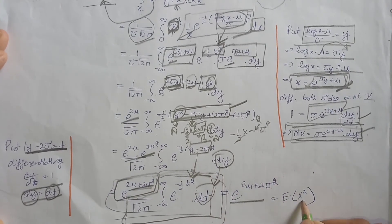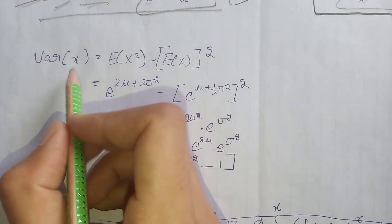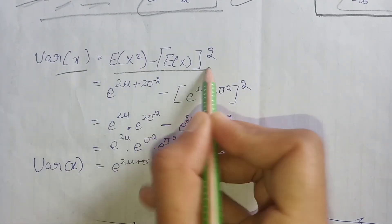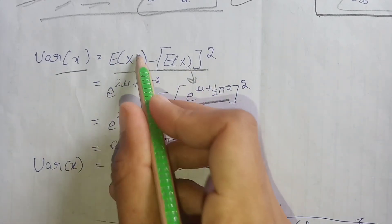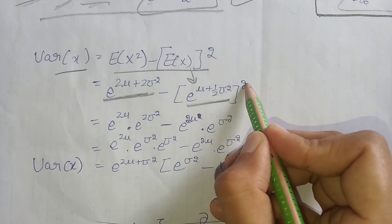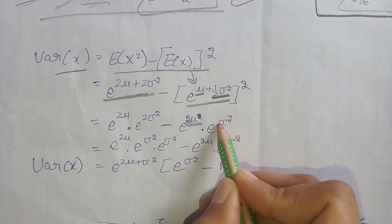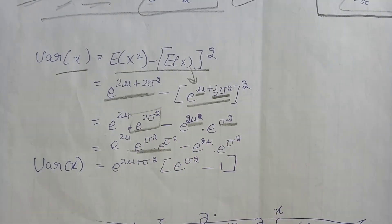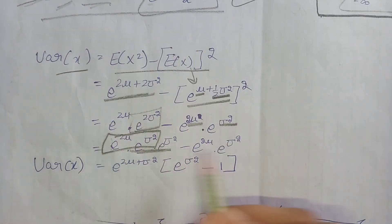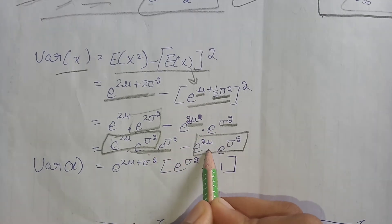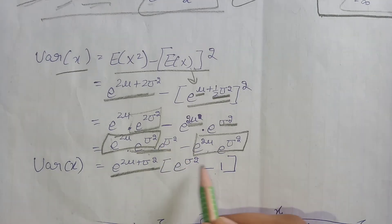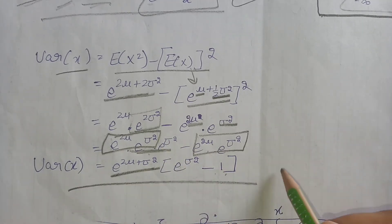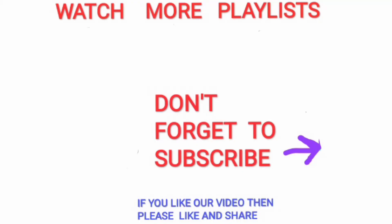Now we calculate the variance. We have E[X] = e^(μ + σ²/2) and E[X²] = e^(2μ + 2σ²). Substituting into Var(X) = E[X²] - (E[X])², squaring E[X] gives e^(2μ + σ²). Factoring out the common term e^(2μ + σ²), we get Var(X) = e^(2μ + σ²) · (e^(σ²) - 1). This is the variance of the log-normal distribution.